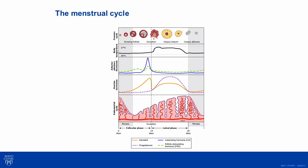This figure essentially shows what I just described, going over the changes that happen at the follicular level on the top bar, followed by the changes in temperature. The third bar shows the changes in follicle-stimulating hormone levels and LH levels, and you can see the LH surge which is responsible for ovulation. The next bar shows the changes in estrogen and progesterone levels, and at the bottom you can see the changes in endometrial lining thickening.